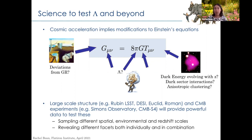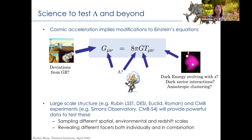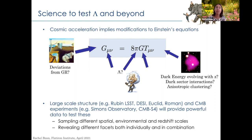Large-scale structure surveys, both from the last couple of decades but now moving to much larger scales in the coming decades — with Rubin LSST, DESI, Euclid, Roman, and upcoming CMB experiments like the Simons Observatory and CMB-S4 — will provide powerful, unprecedented data to test which aspects of this theory space hold true. They sample a variety of spatial scales, different cosmological environments, and redshift scales. My elephant at the top comes from the parable of blind men understanding an elephant: you all have to look at different aspects to get a full picture.